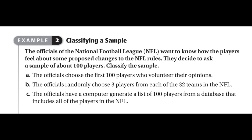If you're choosing the first 100 players who volunteer, that's a self-selected sample. In Part B, the officials randomly choose three players from each of the 32 teams in the NFL. This is going to be a stratified sample — you are grouping your players into teams and then choosing three from every team.